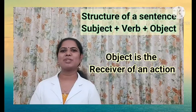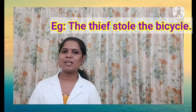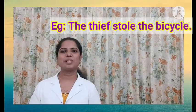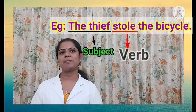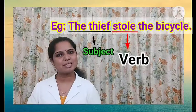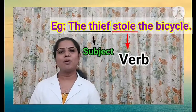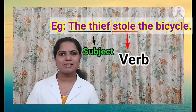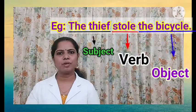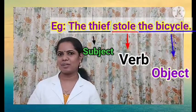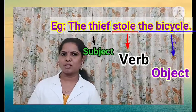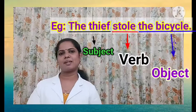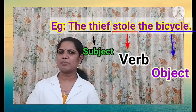Let's look at some examples. For example: 'The thief stole the bicycle.' Here, which is the subject? The sentence speaks about the thief, so the thief is the subject. The action performed is 'stole' — past tense of steal. What or who receives the action performed by the thief? It is the bicycle. The bicycle receives the action, so it is the object. We can ask 'what' or 'whom' to the verb: the thief stole what? — the bicycle. So the bicycle becomes the object of that sentence.